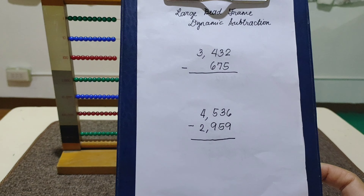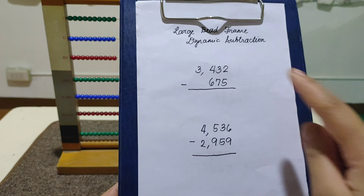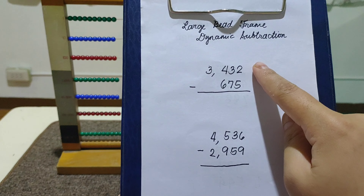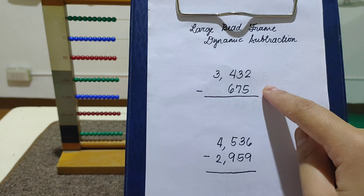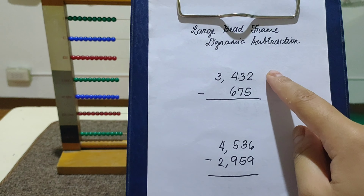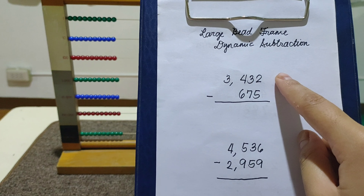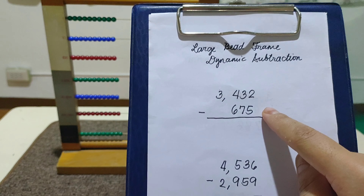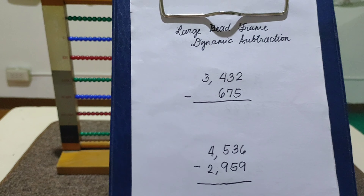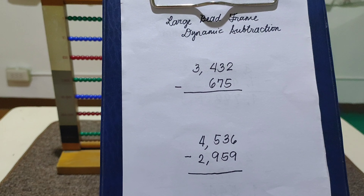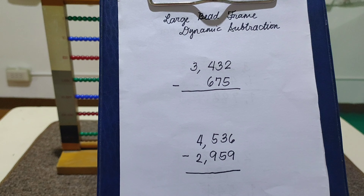Let's read our first problem. We have 3,432 minus 675. Remember: we call this the subtrahend — the number from which we take away. And the number which we take away, we call that the diminuend. And the answer to subtraction, we call that the difference.